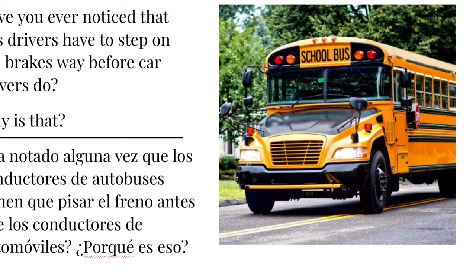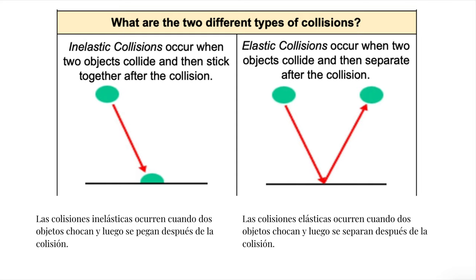There are two different types of collisions. Inelastic collisions occur when two objects collide and then stick together after the collision. Elastic collisions occur when two objects collide and then separate after the collision. In this picture, you can see that in the inelastic collision, the ball stops against the wall.